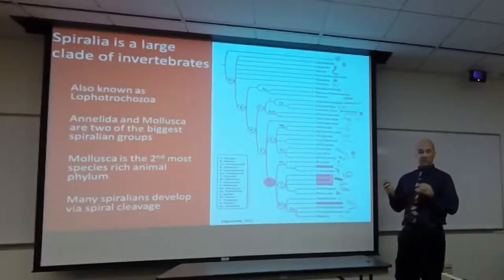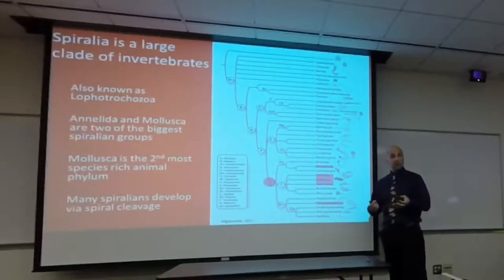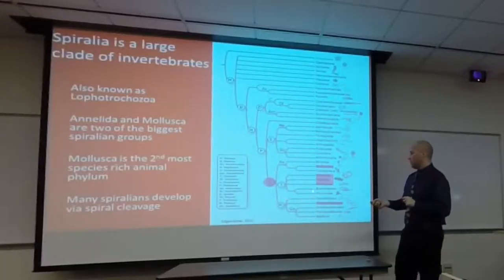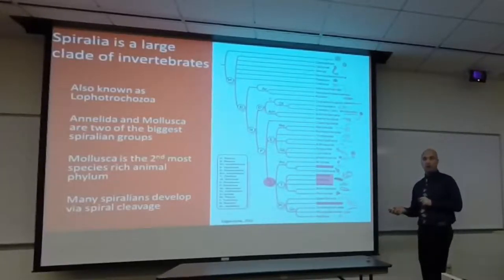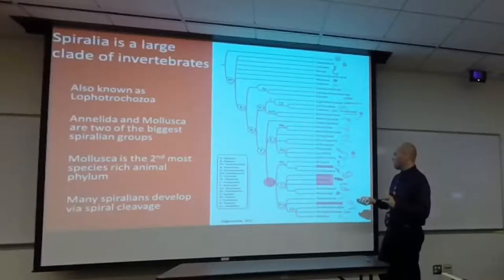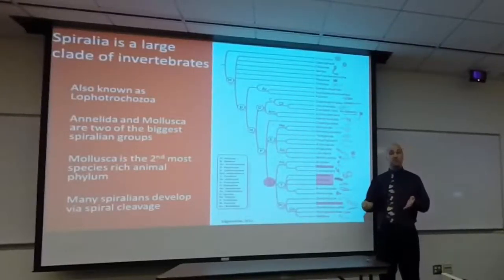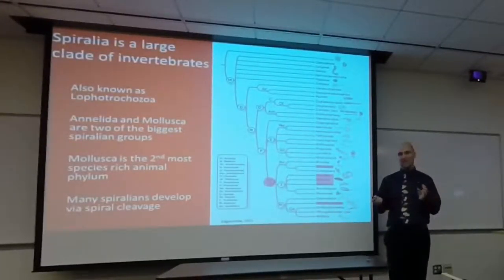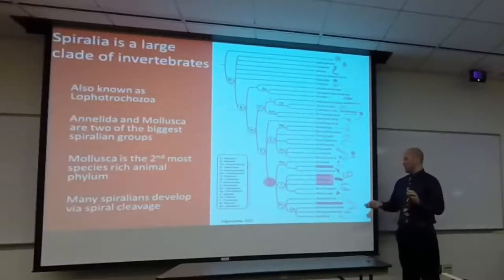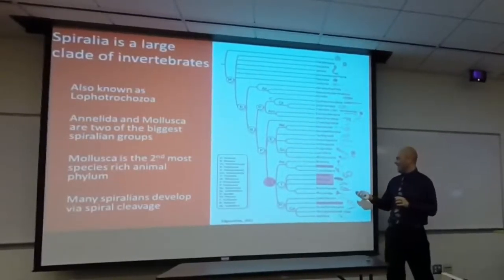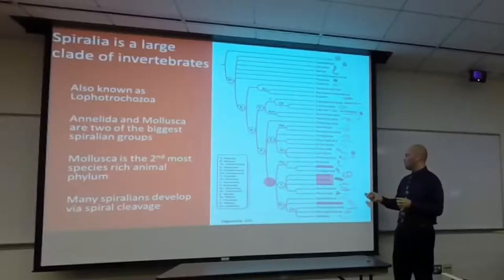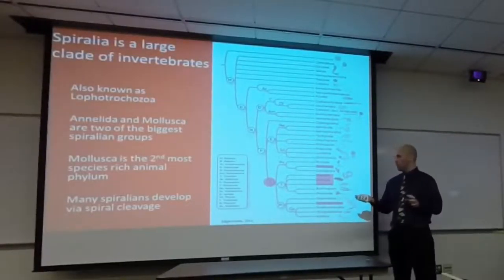There is some evidence in the clade Spiralia that there may be a change in development associated with that transition. Spiralia is a large group of mostly marine invertebrates, including annelids and mollusks — mollusks being the second most species-rich animal phylum. Many of these have spiral cleavage, including annelids, mollusks, and a few other clades.